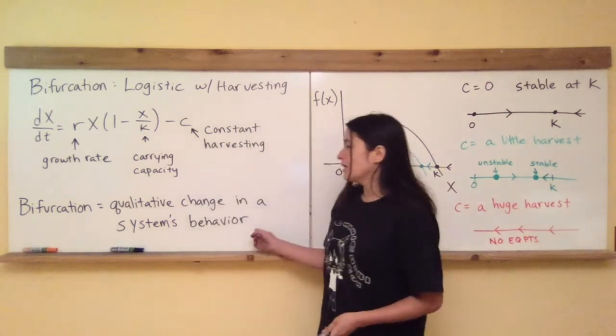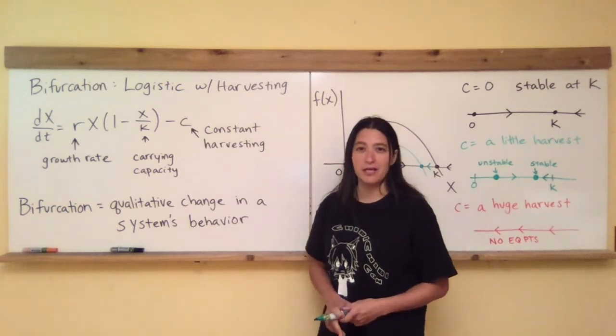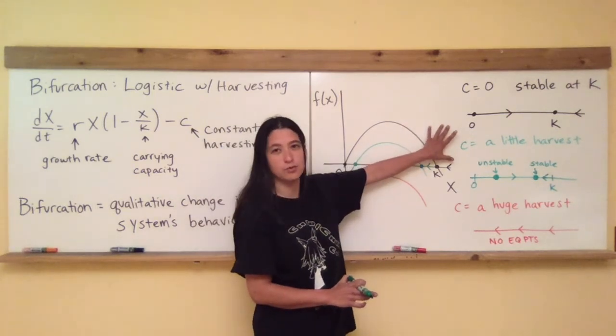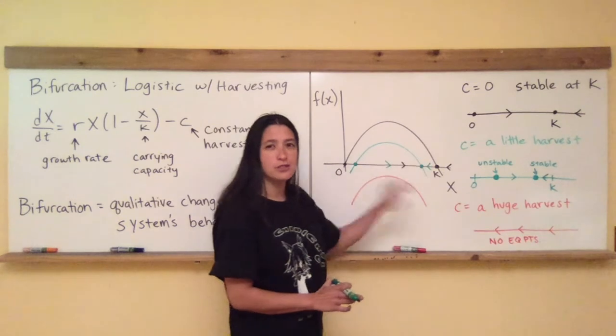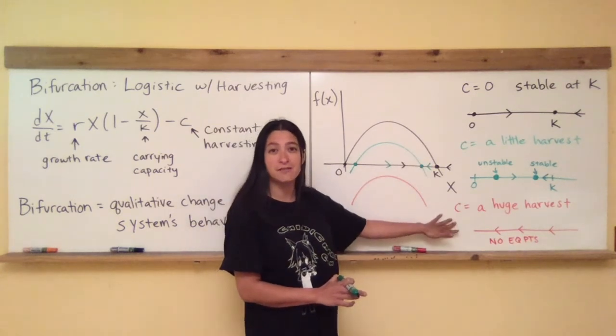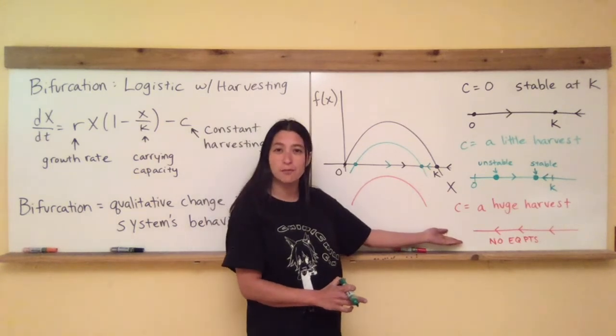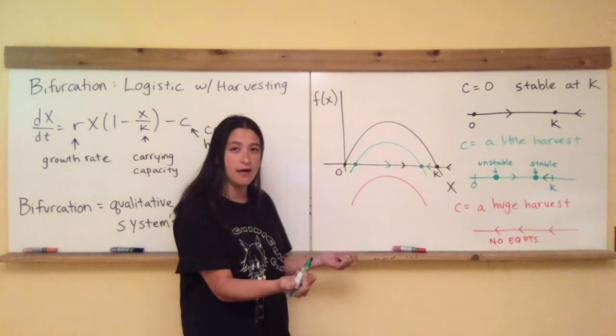So when you look at the statement of bifurcation as a qualitative change in a system's behavior, I will say that at some point between the black and the green, which are qualitatively the same, at some point it flipped to a new, a qualitatively different situation where you have no fixed points, no equilibrium points anymore.